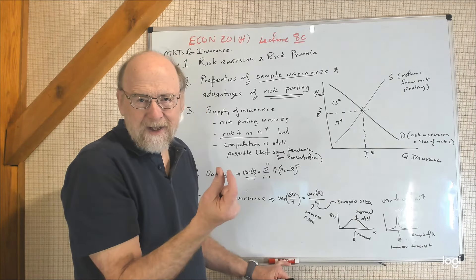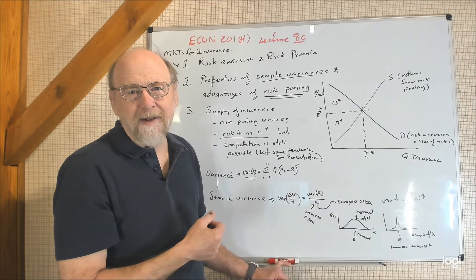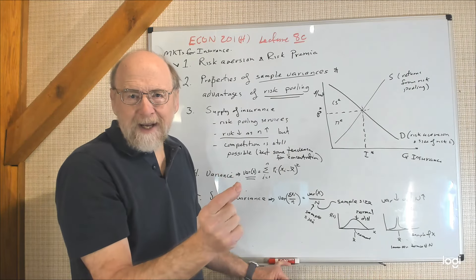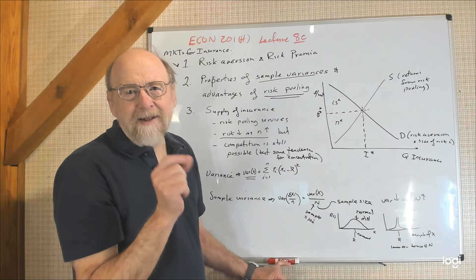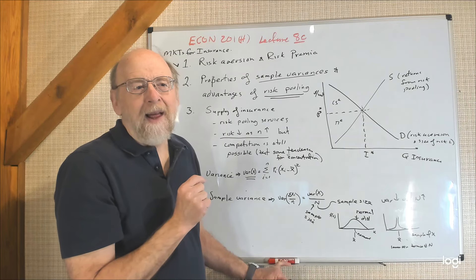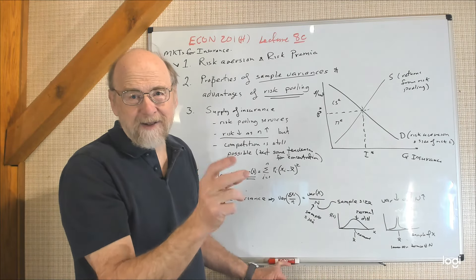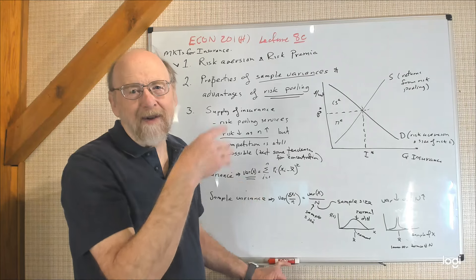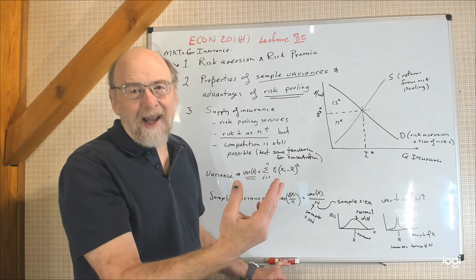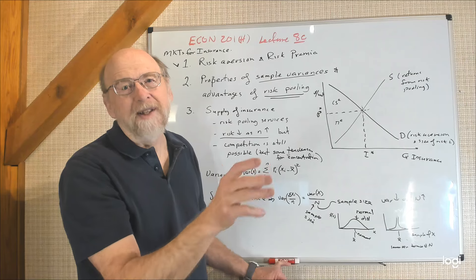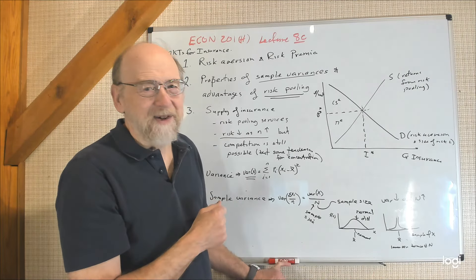It's because of that reduction in variance — that reduction in risk — that insurance companies make money by offering risk pooling services. By selling lots and lots of policies, the range of likely outcomes gets narrower and narrower, so the company can very reliably predict how much it will need to pay out every year. It can price the insurance to generate the reserves necessary to pay all the bills plus cover the overhead of running the business, managing policies, and dealing with fraudulent claims.